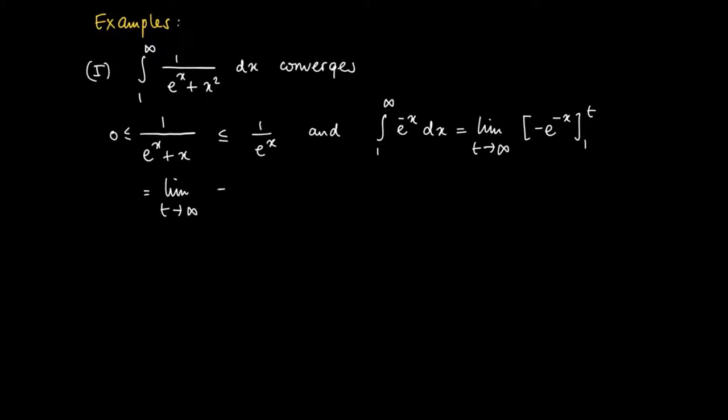And this is no more than minus e to the power minus t plus e to the power minus 1. So by taking the limits, we see that this converges to e to the power minus 1. So now we establish that the integral from 1 to infinity over 1 over e to the power x exists.